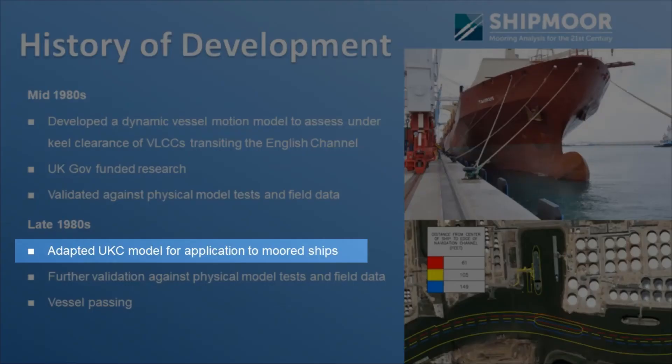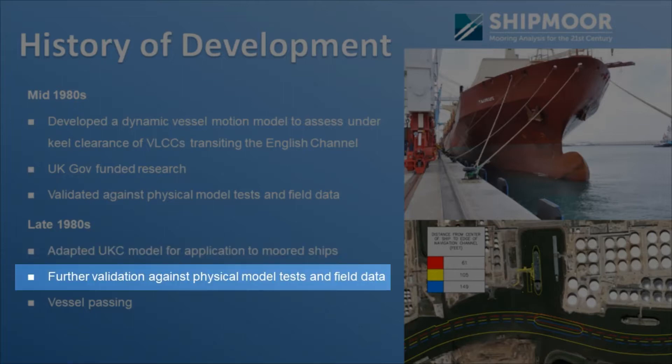In the late 1980s it was adapted so it could be applied to stationary moored ships. By setting the ship speed to zero, the wave-induced vessel motions that are generated were effectively the same calculations. We continued to develop and validate that model against physical modeling tests, and also against field data collected at various locations worldwide, expanding it so it could be applied to a wide range of different ship types, complex wave conditions and other scenarios.